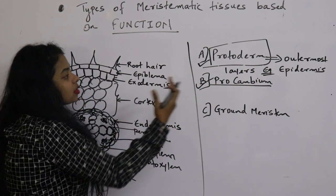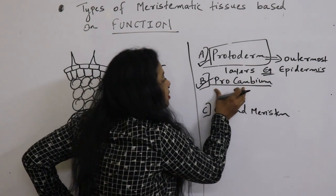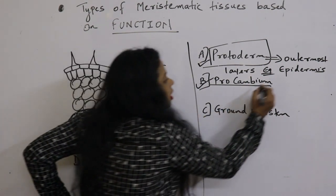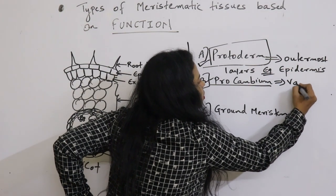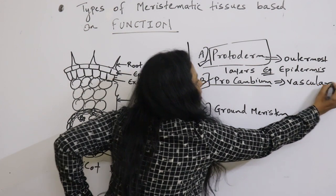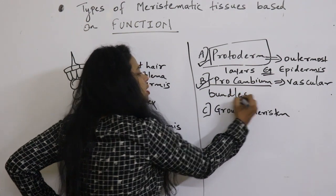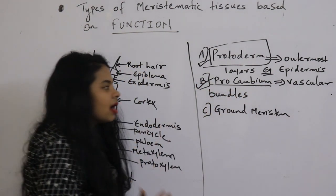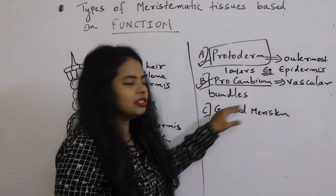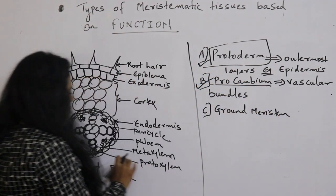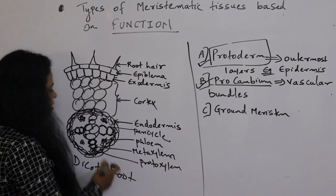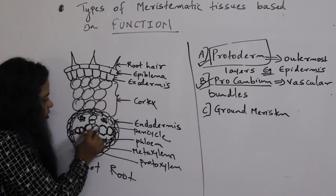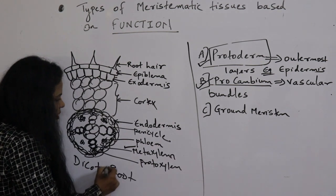Procambium is present in the young parts which give rise to vascular bundles. It is present in the young parts of the plant which gives rise to the vascular bundle. What are the vascular bundles? The outermost was made up from protoderm. The innermost, that is xylem and phloem.